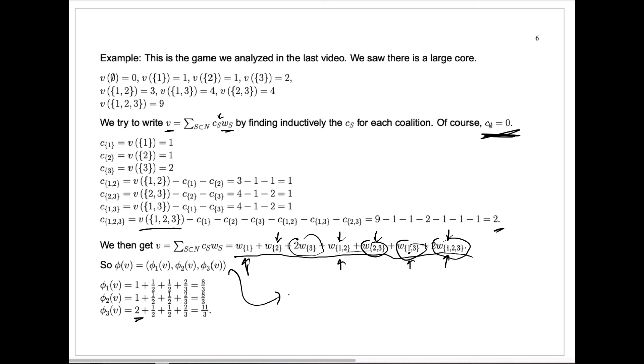In other words, φ of v for this game, our Shapley value for the characteristic function, is precisely 8 thirds, 8 thirds, and 11 thirds. So that tells us that a fair payoff according to the Shapley value for this game is that player 1 would receive 8 thirds, player 2 would get 8 thirds, and player 3 would get 11 thirds.